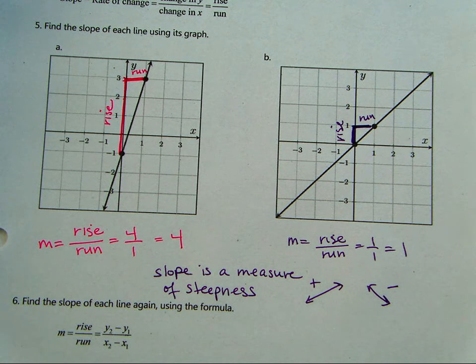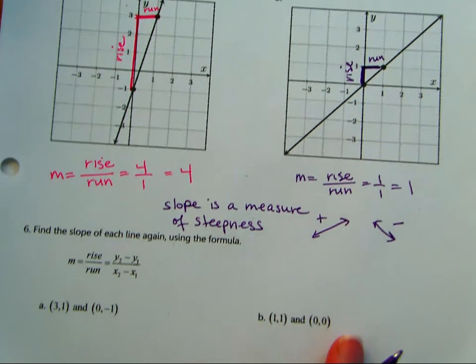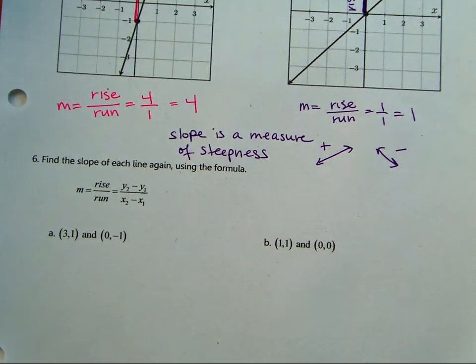So you can just be given a graph, and you're going to calculate the slope from the graph. Also, we could calculate it using a formula, which this might look daunting, but we've actually already been using this formula today. The change in the y over the change in the x. Weren't we subtracting two y values and then subtracting two x values? So this is another way of writing what we've been doing.